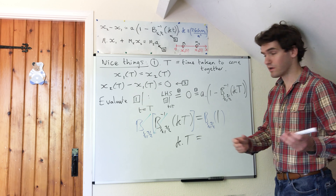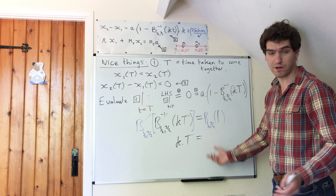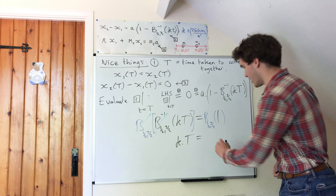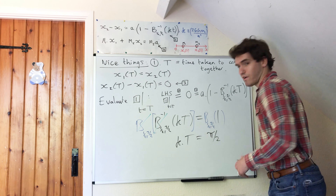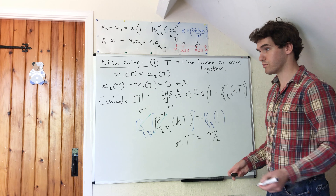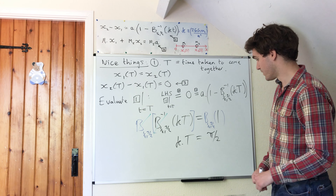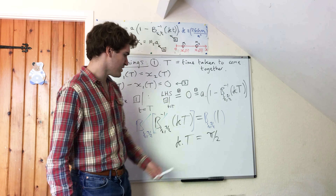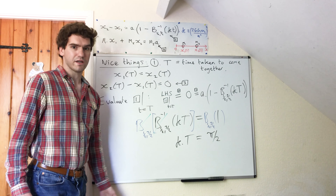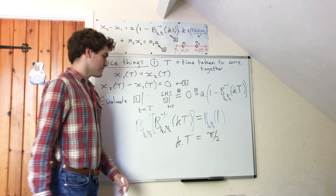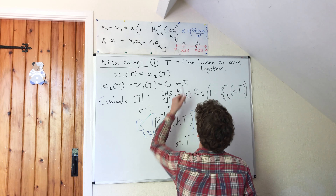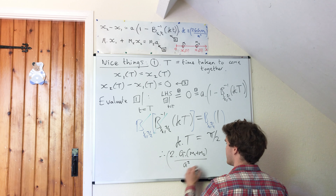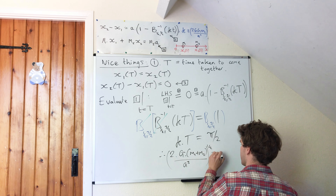In a previous video I actually worked out what this was — please check the link in the description if you want to see it — but you can evaluate it to pi over two. You can do that directly using integration, or you can also use the gamma relationship, which is probably easier. So we get kappa times big T equals pi over two. I'm now going to plug in my value of kappa, and therefore we get that the square root of two times big G times m1 plus m2 divided by a cubed, times big T, is equal to pi divided by two.